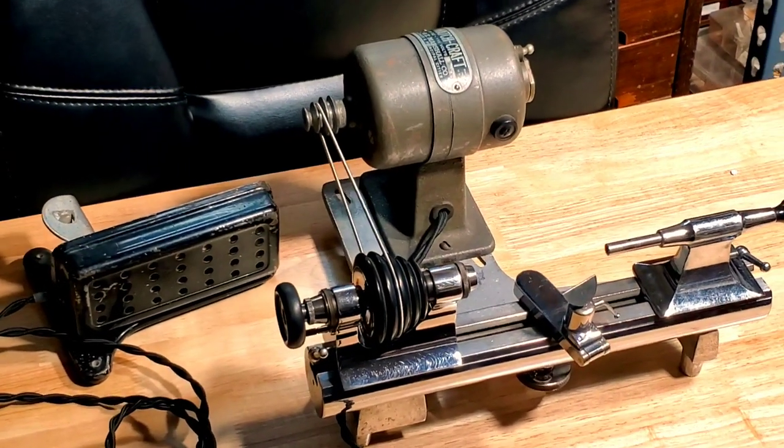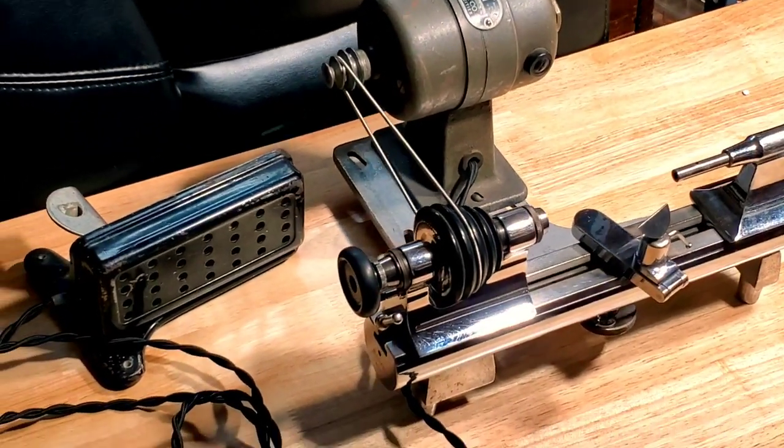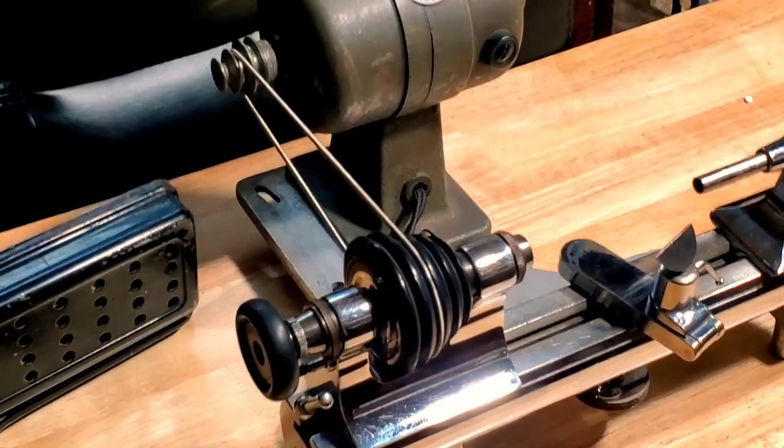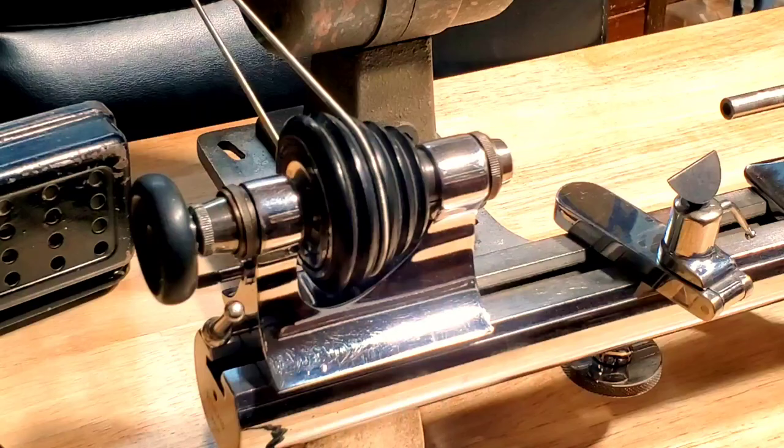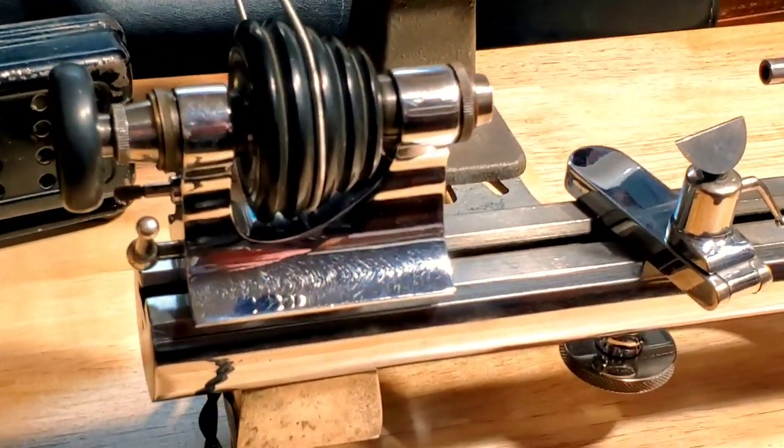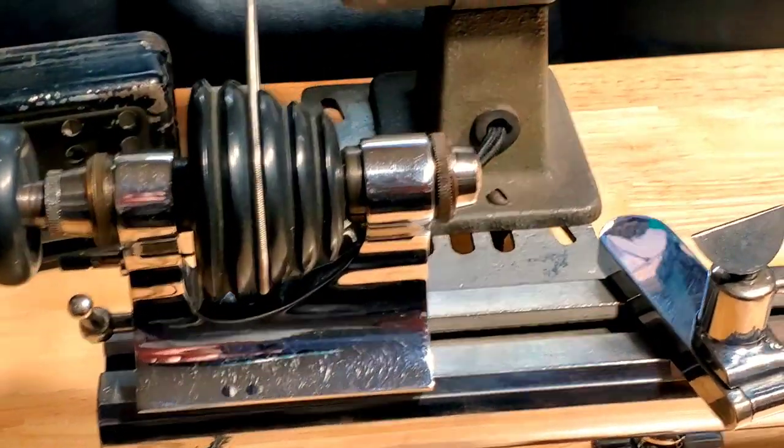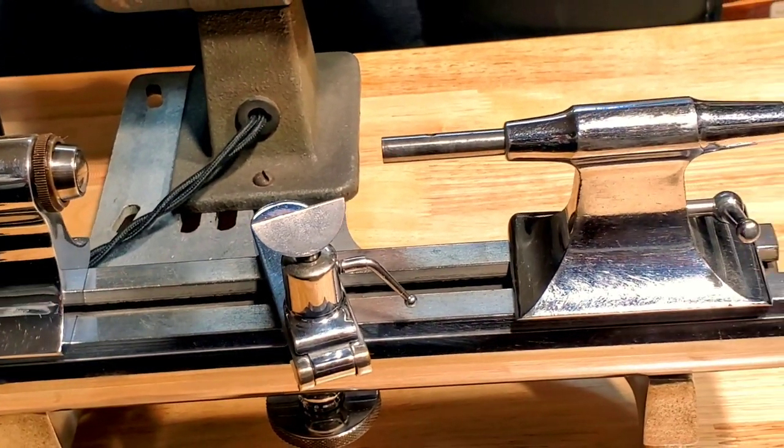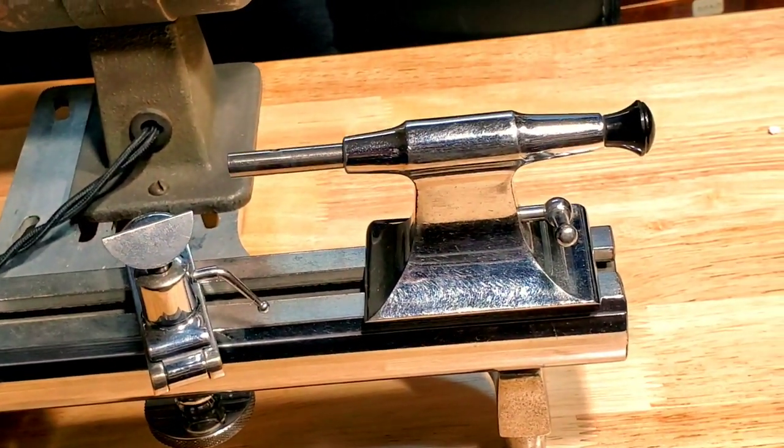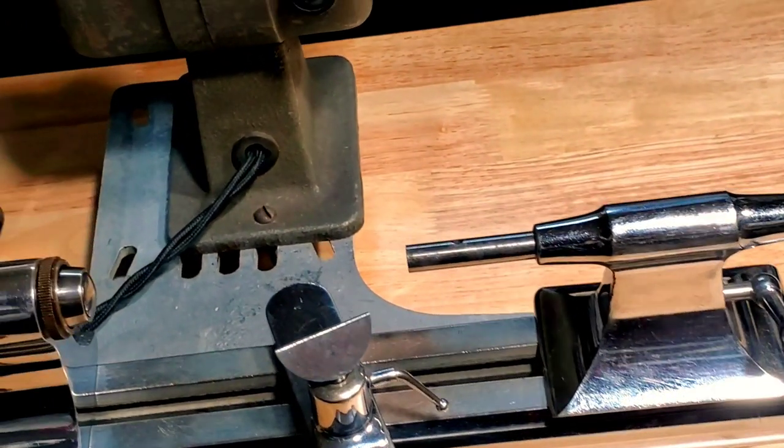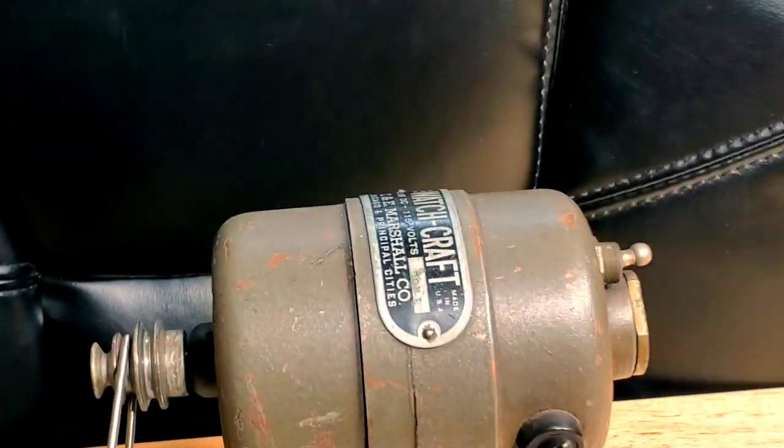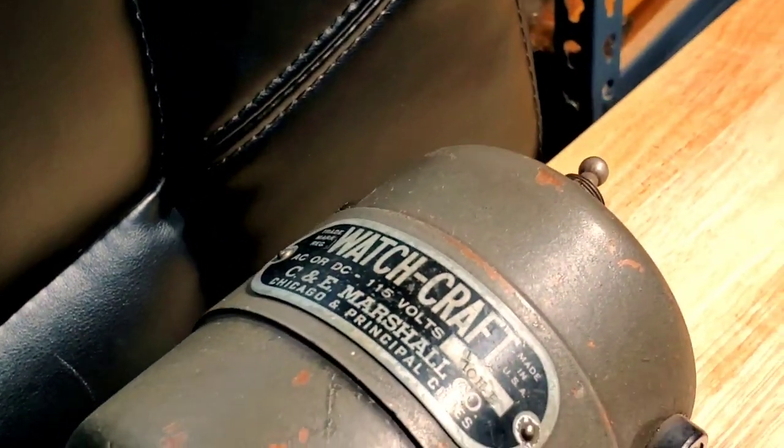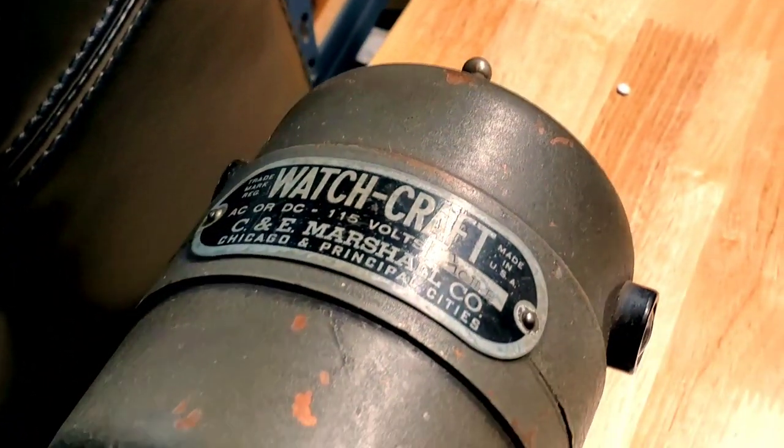Today our main tool is the Marshall lathe, equipped with a forward-reverse motor. This is very important for precise watchmaking work. There's just so many things this can do: cutting gears, polishing, grinding, shaping. You name it, it can do it. You just need to get the accessory for it.